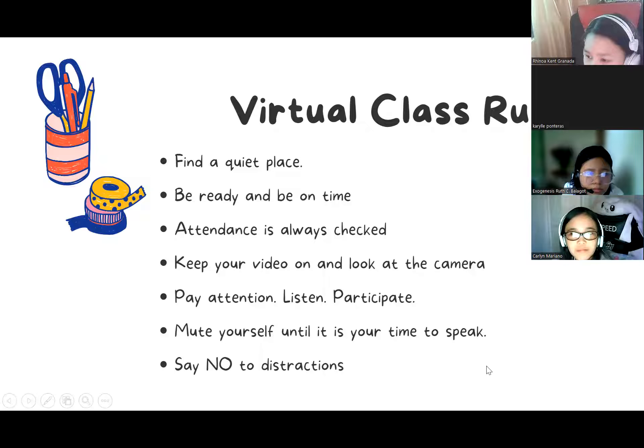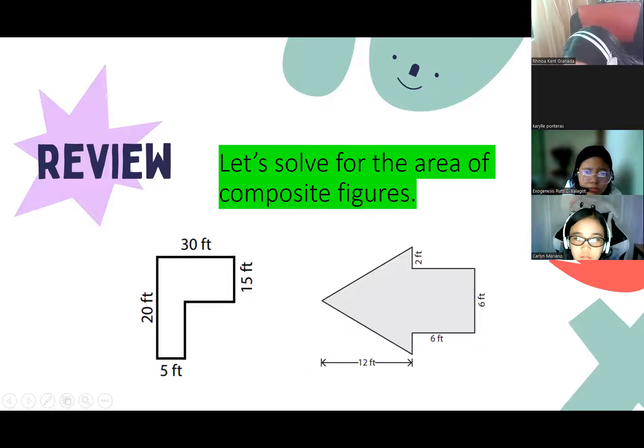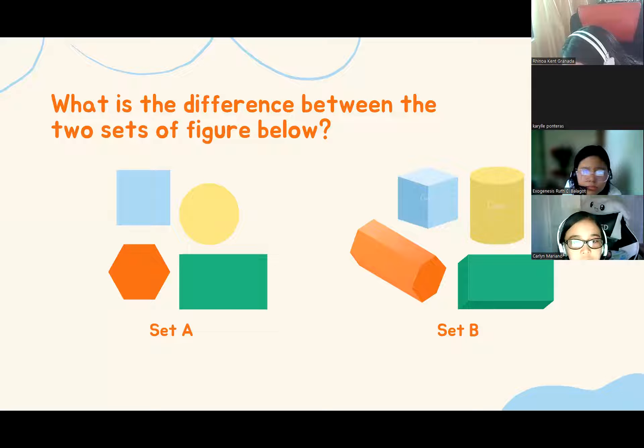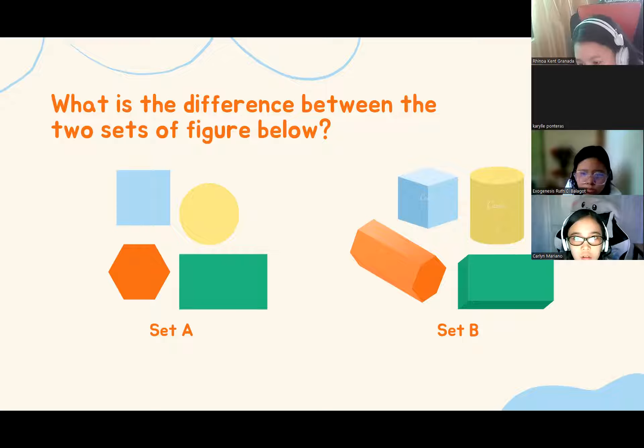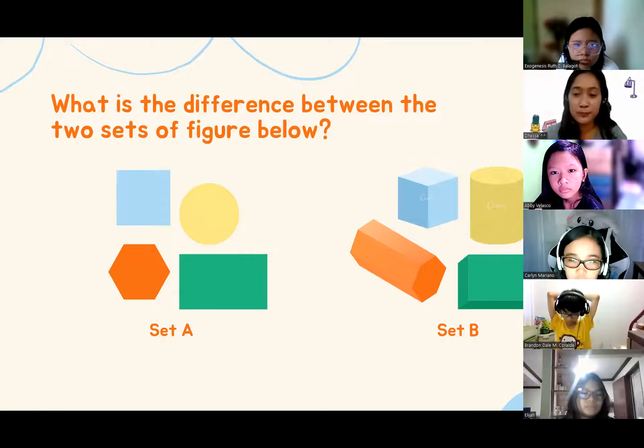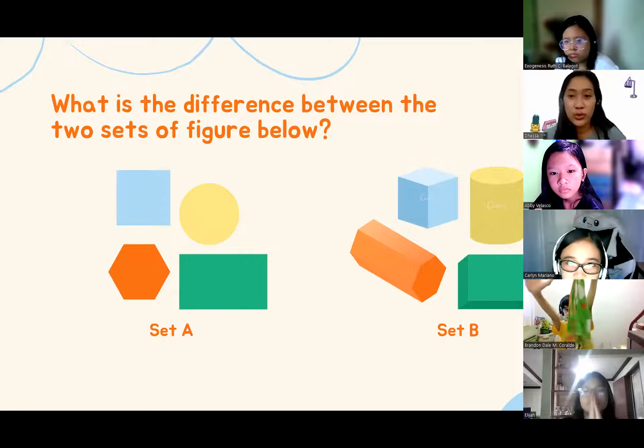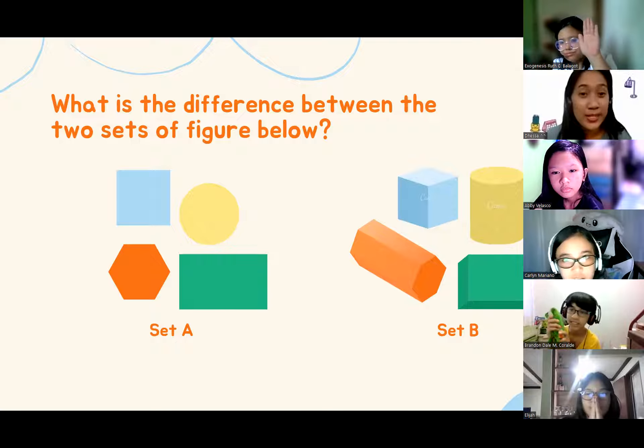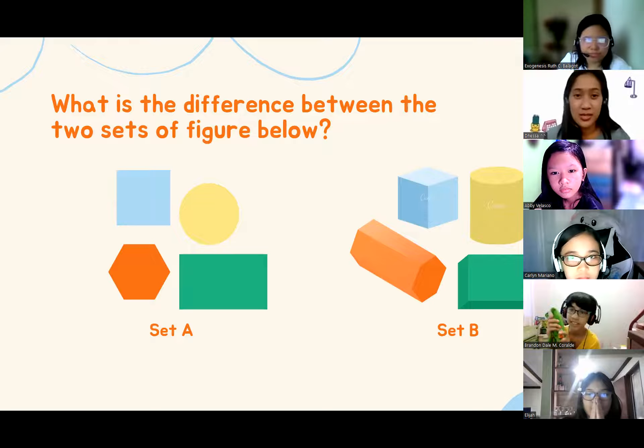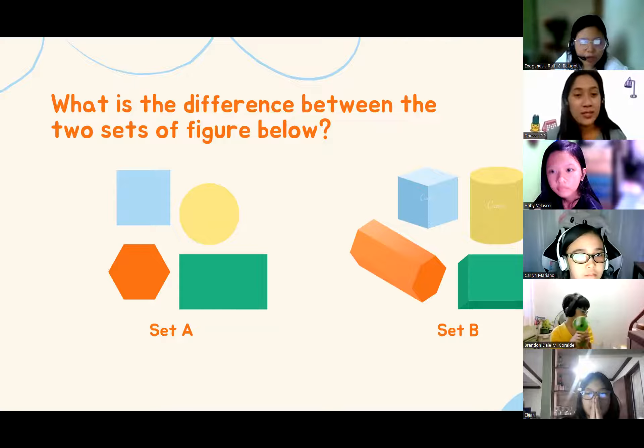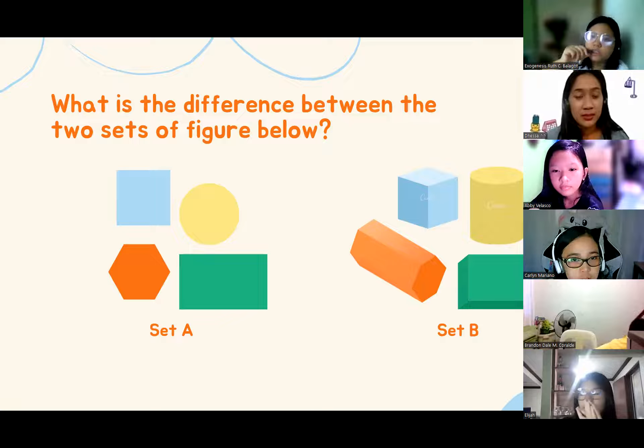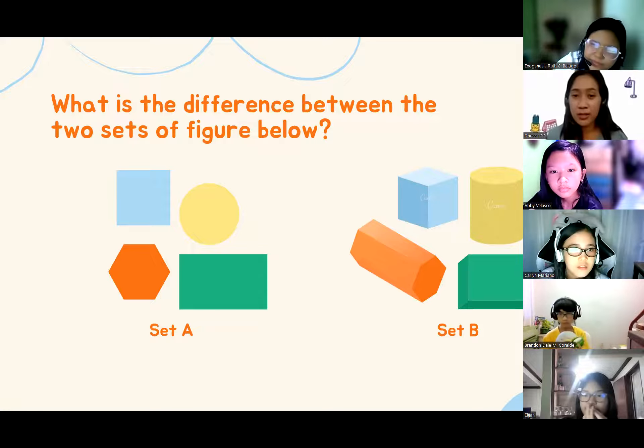Okay. Say no to distractions, everybody. And say no to sleepiness. Okay. Anyway. Now, you do have the review of the composite figures. I hope you will not forget this one. And then you also, yeah. Who can review? Who can say something about these two sets of figures? We have Chanel. We have Brandon. Who else? Okay. Exo. One is 2D and the other one is 3D. Okay. Very good.